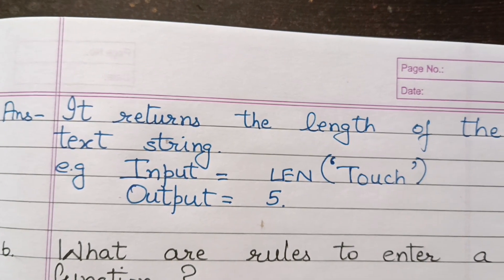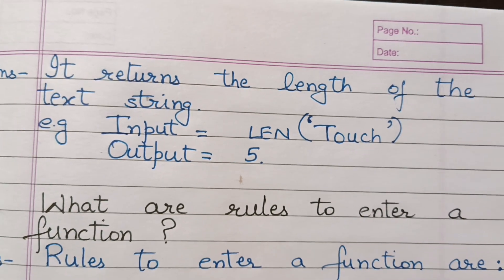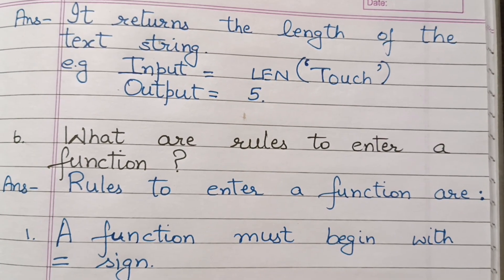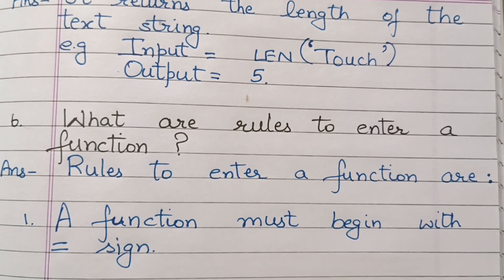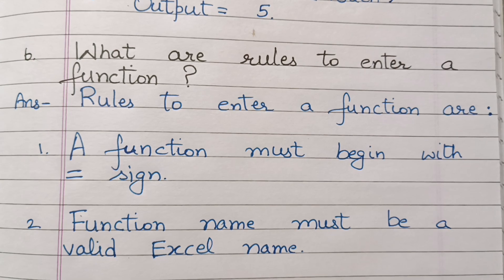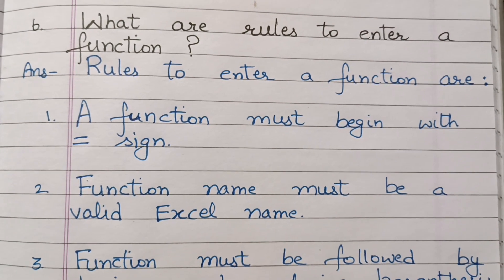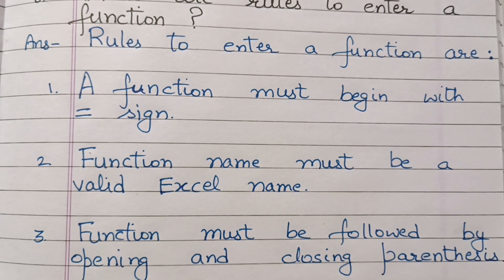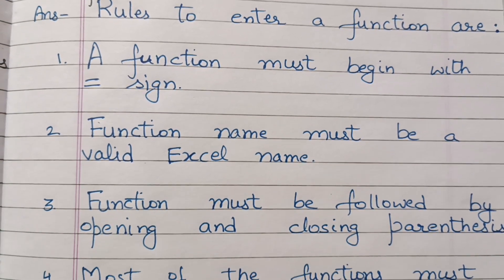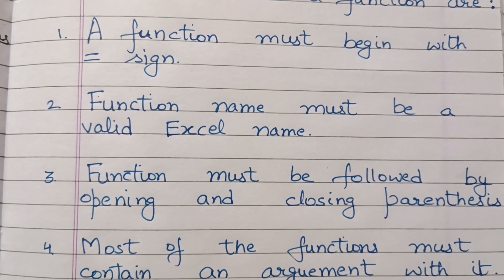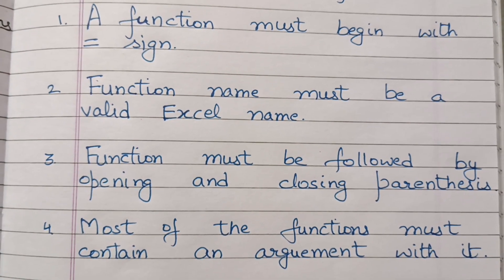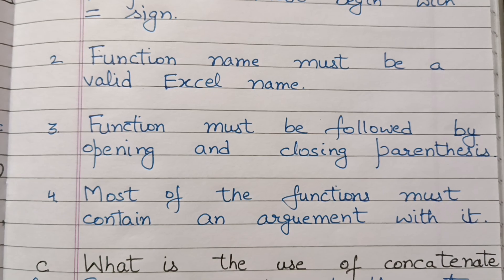What are the rules to enter a function? Rules to enter a function are: A function must begin with an equal to sign. Function name must be a valid Excel name. Function must be followed by opening and closing parenthesis. This is the answer. Most of the functions must contain an argument with it. So these are the four points.